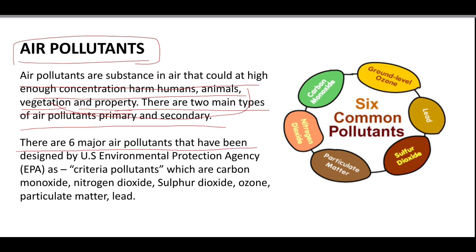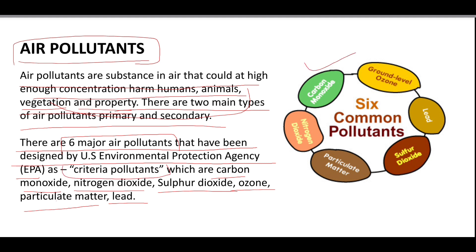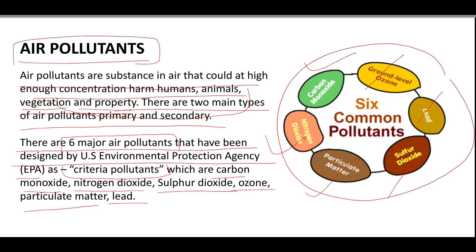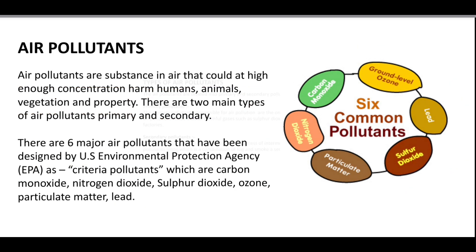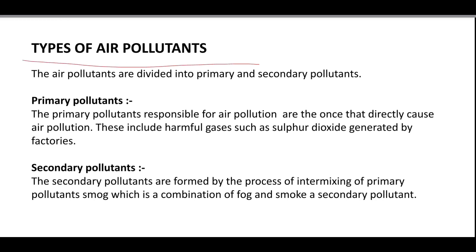There are six major air pollutants defined by the U.S. Environmental Protection Agency (EPA): carbon monoxide, nitrogen oxide, sulfur dioxide, ozone, particulate matter, and lead (Pb). These are all called criteria pollutants, and here you can see them listed: carbon monoxide, nitrogen dioxide, particulate matter, sulfur dioxide, lead, and ozone.